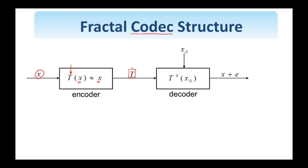The decoder, after receiving this transformation, performs this iterative reconstruction. It starts from an arbitrary initial condition, and then generates the first estimate of the image as T applied to X0. The second estimate, the second iteration that is, is T applied to X1, which is T applied to T X0. So, it's T squared X0.